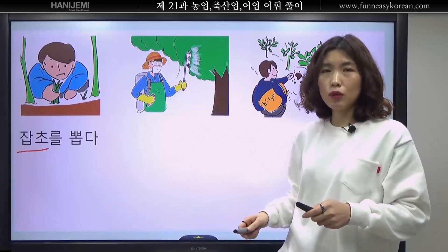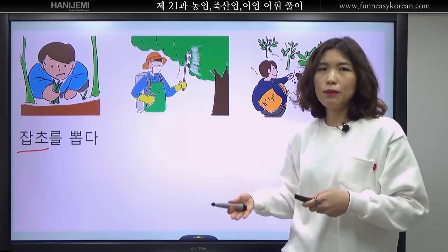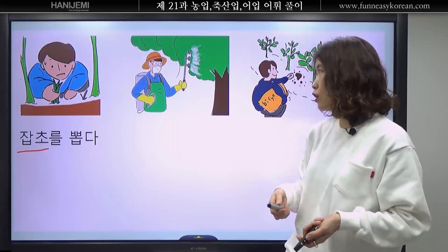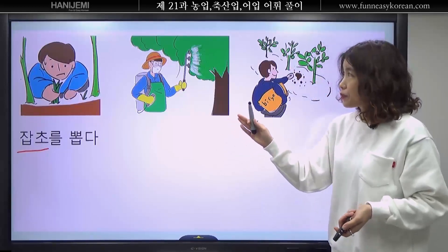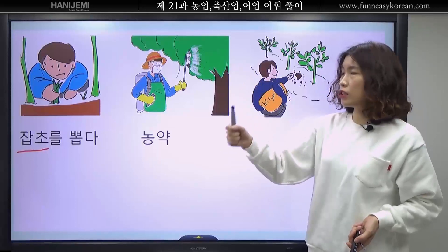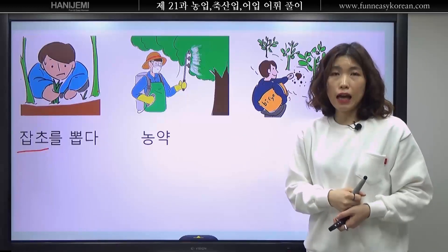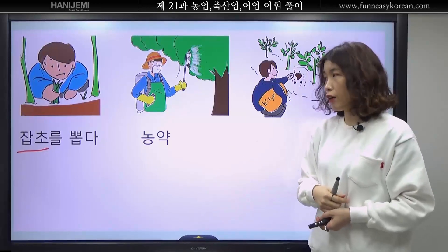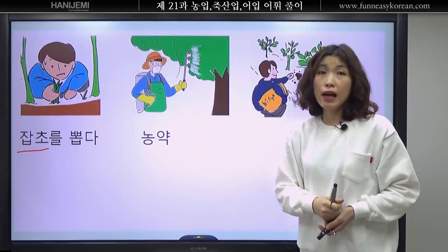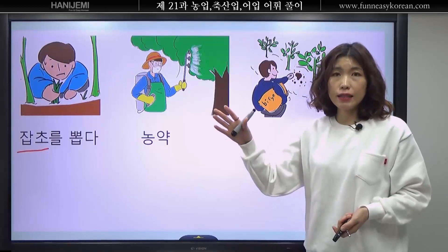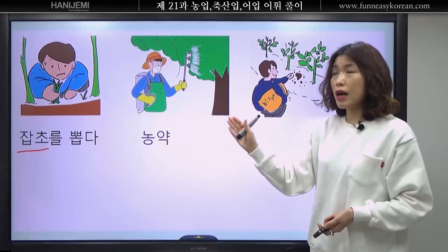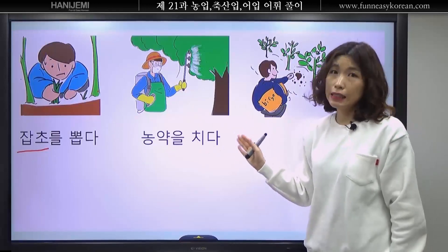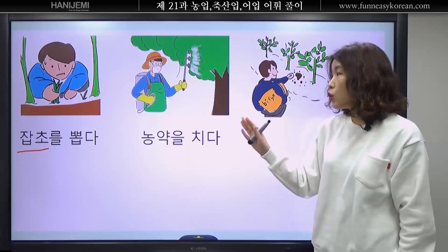잡초를 뽑아요. 잡초를 뽑아야 해요. 잡초가 많아요. 잡초를 빨리 뽑아요. 그 다음에 여기에 약을 줍니다. 나무에도 약을 주고 다른 곳에도 약을 줄 수 있어요. 농사 지을 때 쓰는 약, 농약이라고 해요. 농약을 지금 어떻게 해요? 치익, 치익. 농약을 치고 있어요. 농약을 치다.